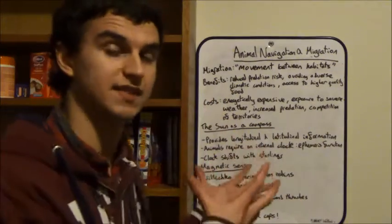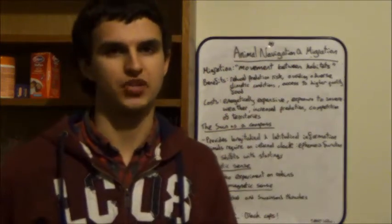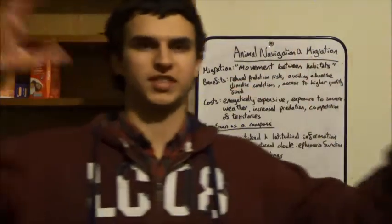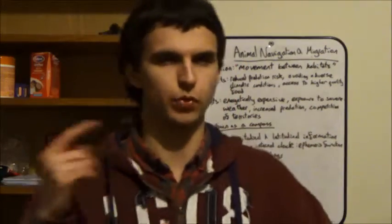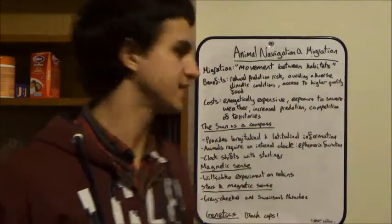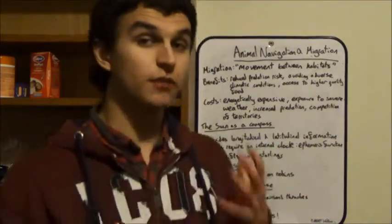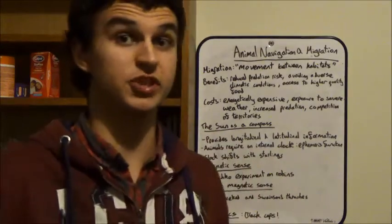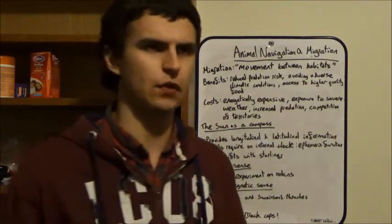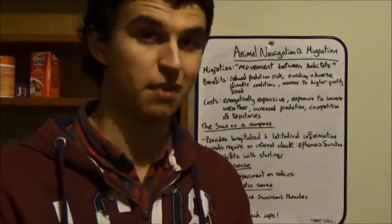Now many animals can use the sun as a compass because its daily trajectory provides the animals with longitudinal and latitudinal information. However, this does require a knowledge of how the sun moves across the sky or rather we do because obviously the sun doesn't move we move around the sun. Let's get that basic physics sorted out. So the animals require some sort of internal clock in which to do this. And this is known as ephemeris function. And this often involves using the polarisation of light which is something that the monarch butterfly uses. Arguably one of the most impressive migratory feats of all. That monarch butterflies migrate from Canada all the way to Mexico to spend the winter months. Absolutely fantastic.